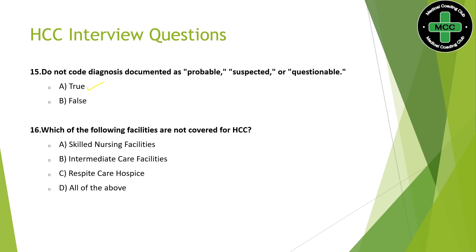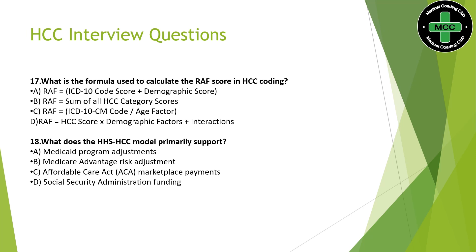Next question: Which of the following facilities are not covered for HCC? Skilled nursing facilities, intermediate care facilities, and hospice — the answer is all of the above; all of these facilities are not covered for HCC coding. Next question: What is the formula used to calculate the risk adjustment factor? The formula is: HCC score = Demographic Factors multiplied, plus Interactions.